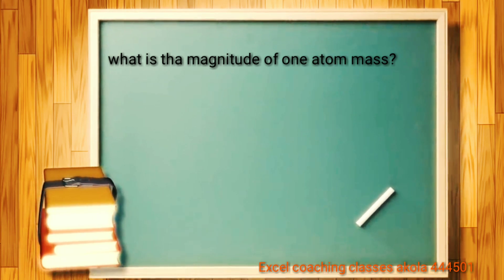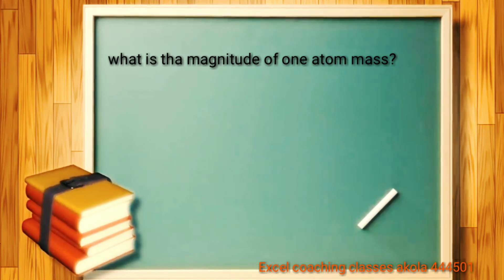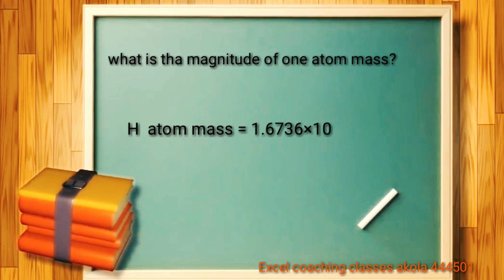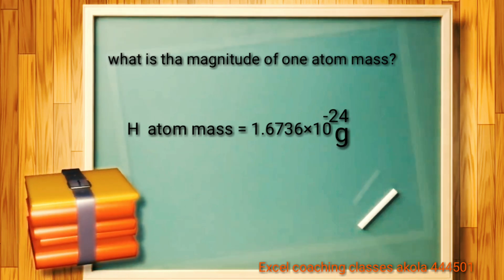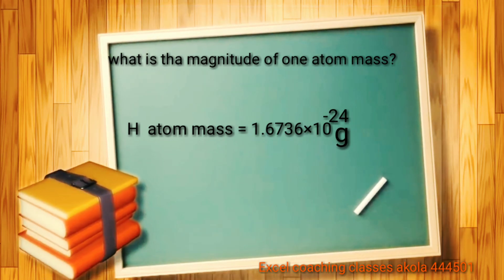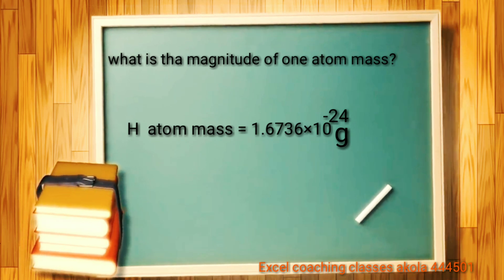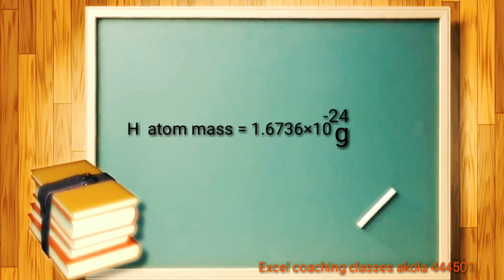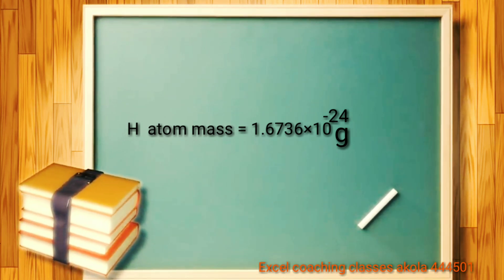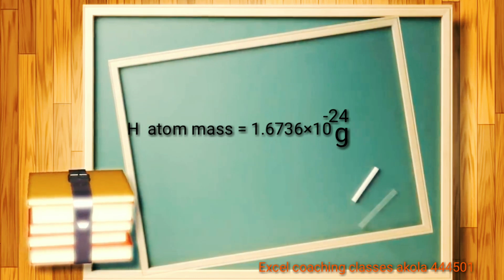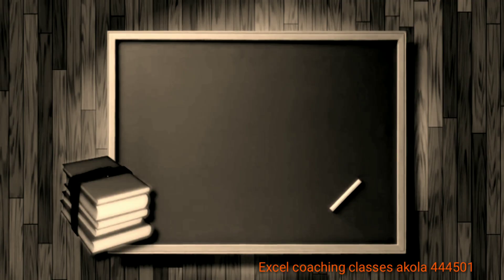The next question: what is the order of magnitude of mass of one atom? So here the hydrogen atom is given. This is a very minute quantity: 1.6736 × 10⁻²⁴ grams. This is very minute. You have to calculate the total amount of molecular mass using this method.